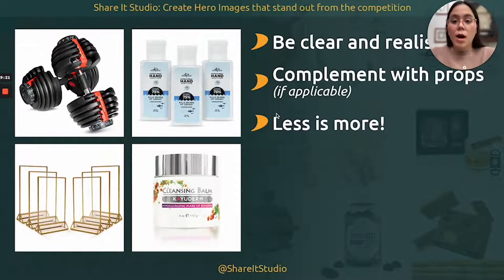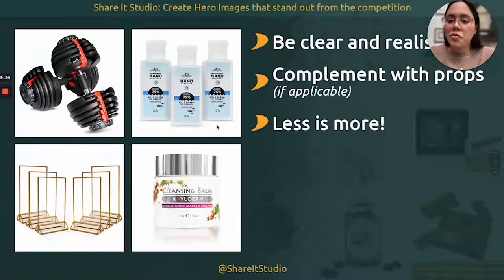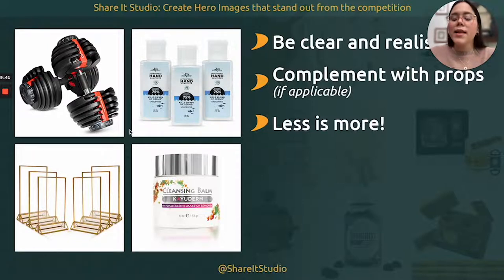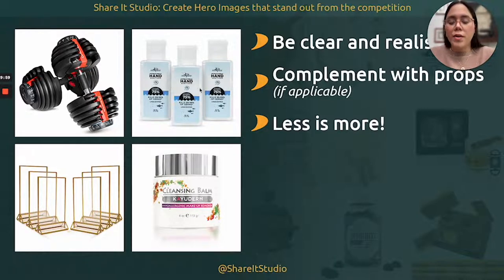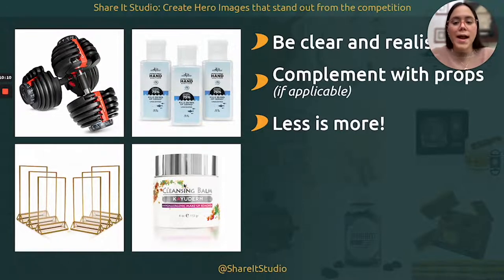Even though we can play with props and keep it clear and realistic, you also have to think that less is more. These on-screen images show products that are very clear and easy to understand, yet still creative and beautiful. These are dumbbells — we just placed them in a different position, but they're self-explanatory, and if you zoom in you can see the numbers showing adjustable weight. We have a three-pack hand sanitizer with the bottles in a creative position, a manual holder, and a cleansing balm that's pretty self-explanatory. Images must be creative, but that doesn't mean you have to do something crazy for them to stand out.